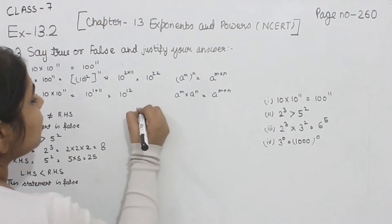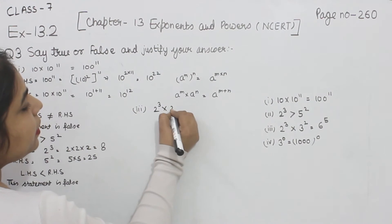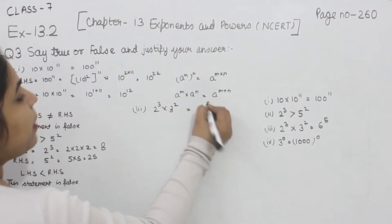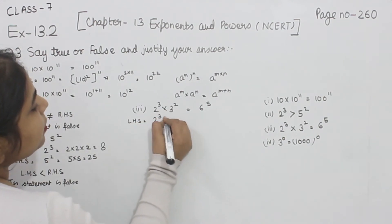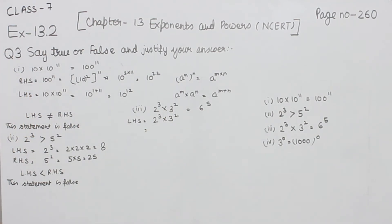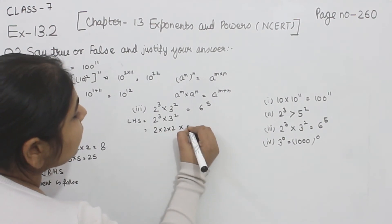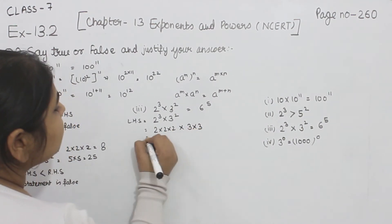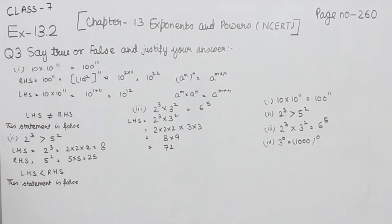Now part 3: we have 2 to the power 3 multiplied by 3 to the power 2 is equal to 6 to the power 5. Taking the left hand side: 2 to the power 3 means 2 multiplied by itself 3 times, and 3 to the power 2 means 3 multiplied by itself twice. So we have 2×2×2×3×3. That gives us 8 × 9, which equals 72.